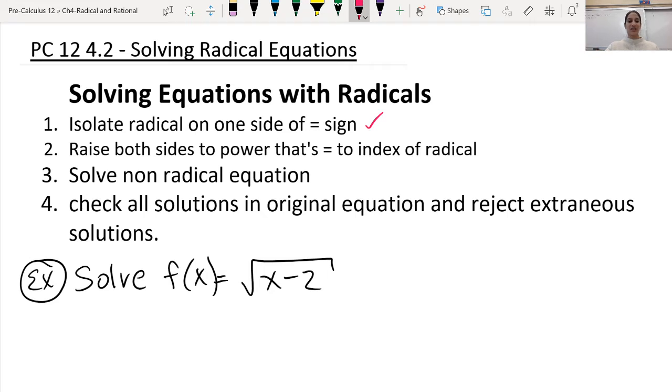That's already done for us, it's already isolated. Raise both sides to a power that's equal to the index of the radical. So this is just like a 2 there, but we don't normally write it.